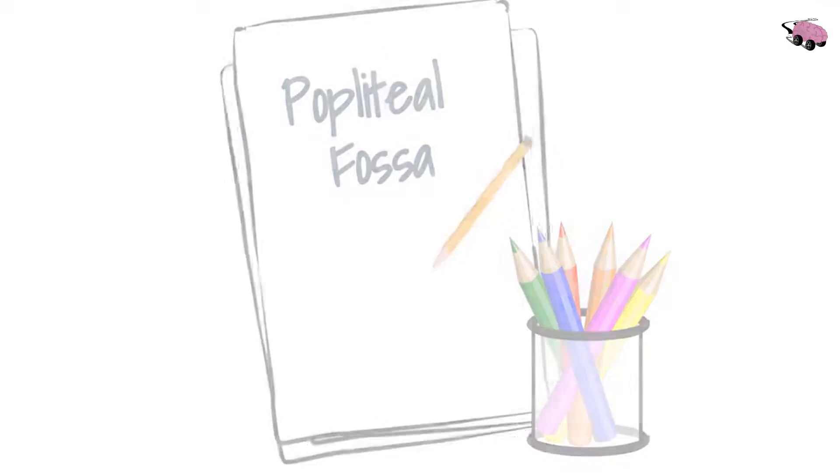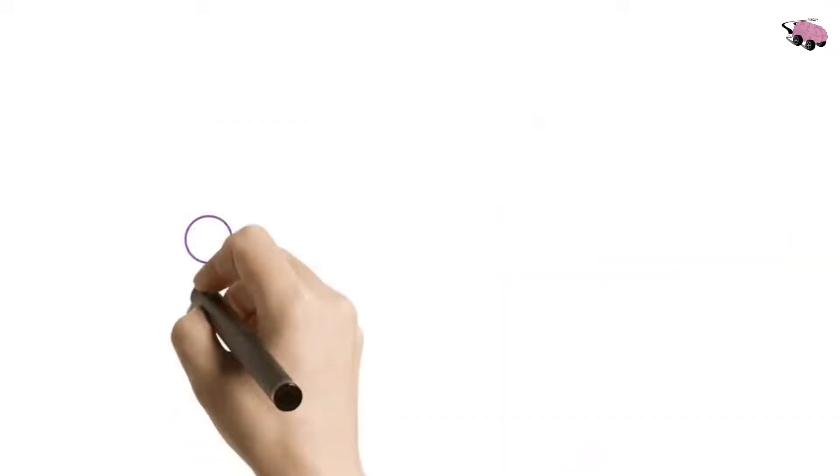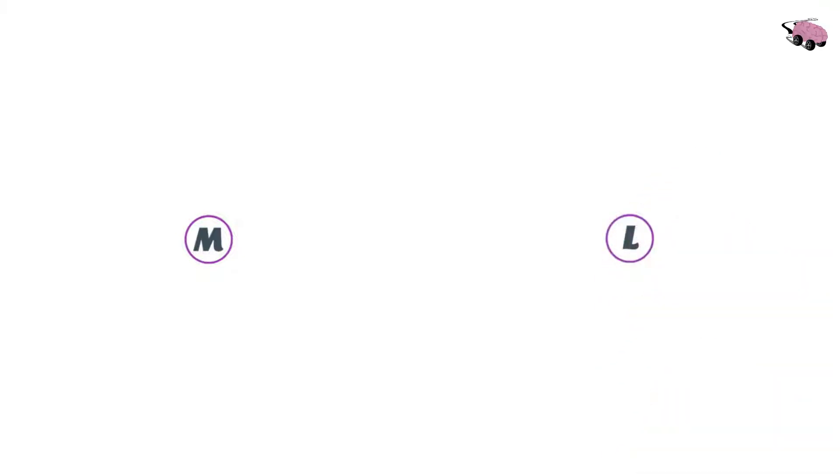Before we begin, grab a paper, a pencil, and some colored pencils. Let's start by labeling our medial side and our lateral side. First, we'll draw in a diamond-shaped figure. This will represent the borders of the popliteal fossa.